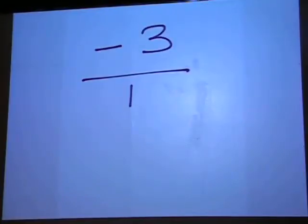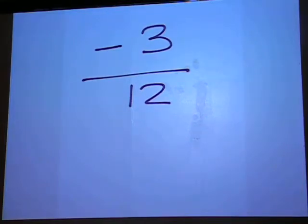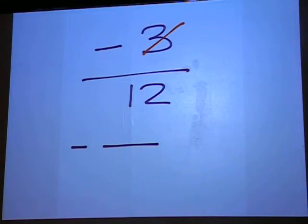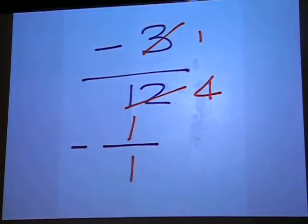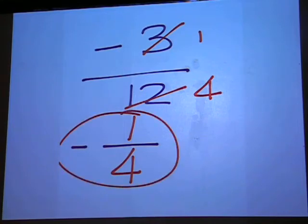If you have a negative 3 over a negative 12, when you write your final answer, you have to reduce it. But first, since you have one negative sign, write it out to the left of the fraction bar, then go back and reduce. 3 into itself once, and into 12, 4 times. So your final answer should be a negative 1 fourth.